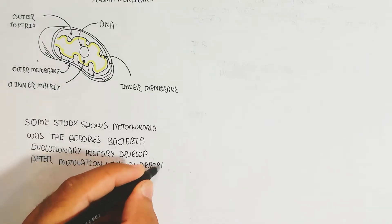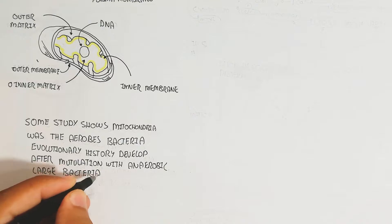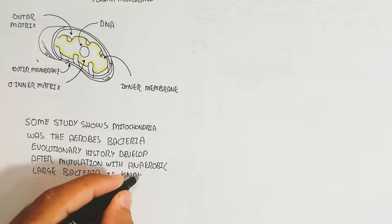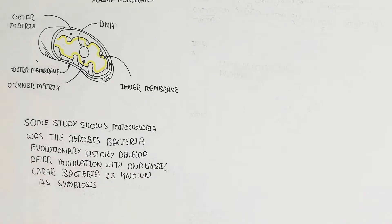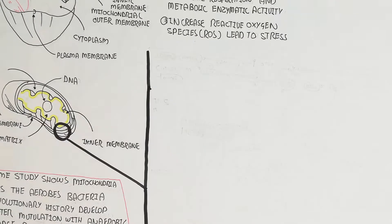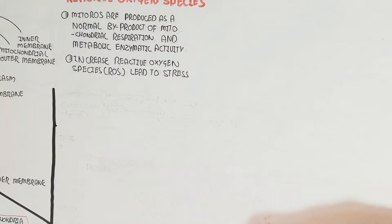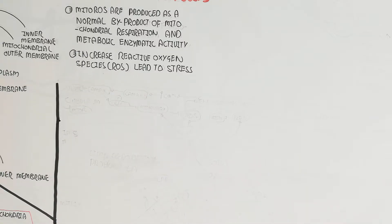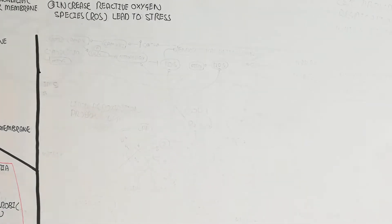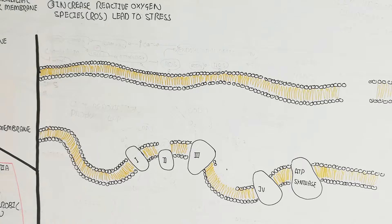Through symbiosis, the mitochondria provided energy through oxygen fixation while the anaerobic bacteria provided shelter and other resources. This mutual relationship led to the development of eukaryotes from prokaryotes, because eukaryotes contain a nucleus — this relationship is known as endosymbiosis.